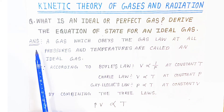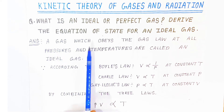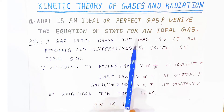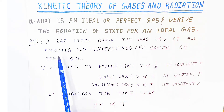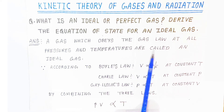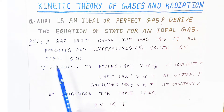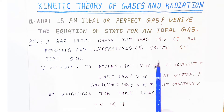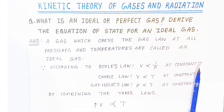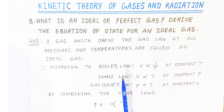This is how you write the answer: a gas which obeys the gas laws at all pressures and temperatures is called an ideal gas. According to Boyle's law, volume is inversely proportional to pressure at constant temperature.